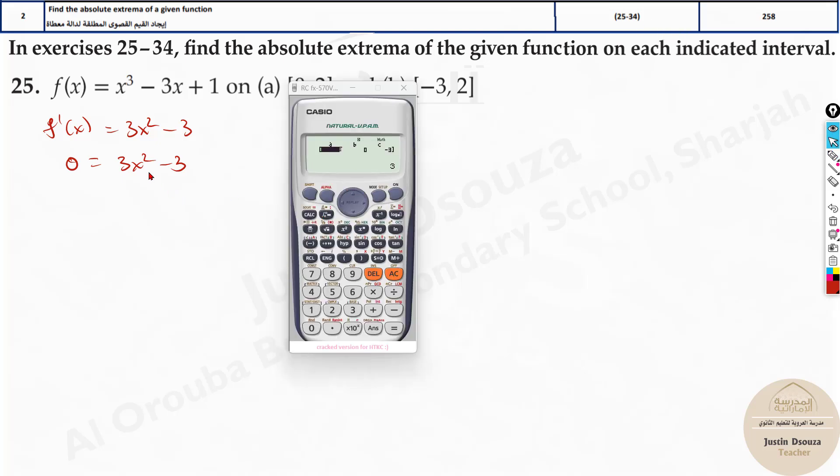Now we put in the calculator. After going to mode phi 3, you have to put in the coefficients. Coefficient of x squared is 3, there is no coefficient of x so it's 0, and the constant term is minus 3.